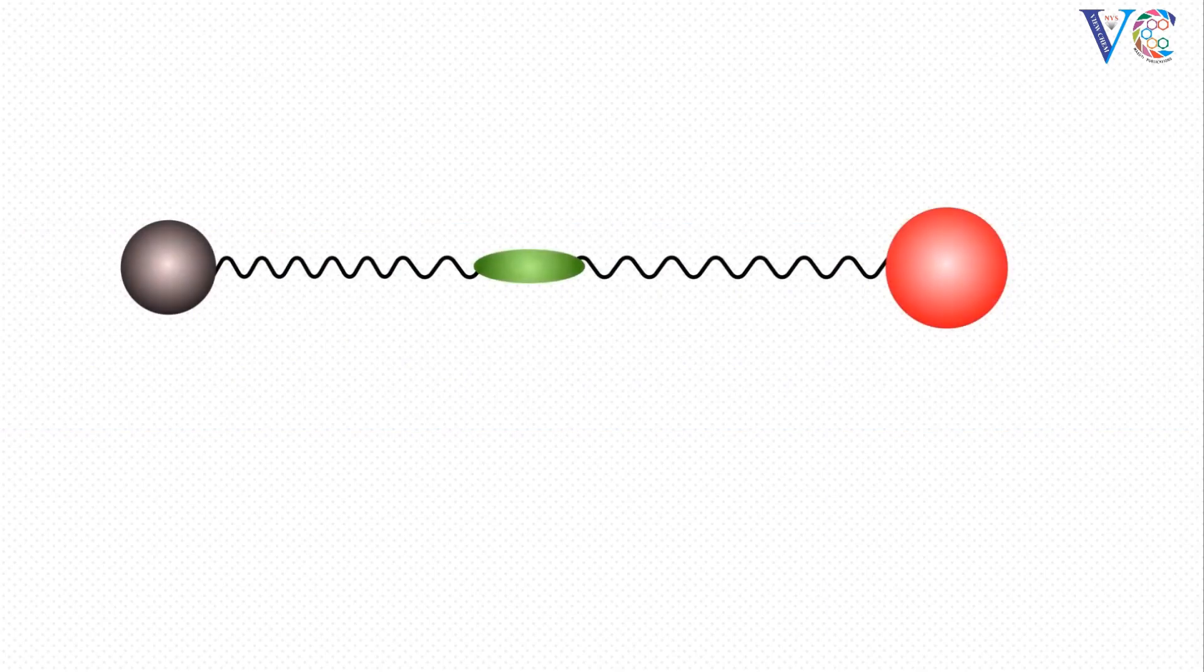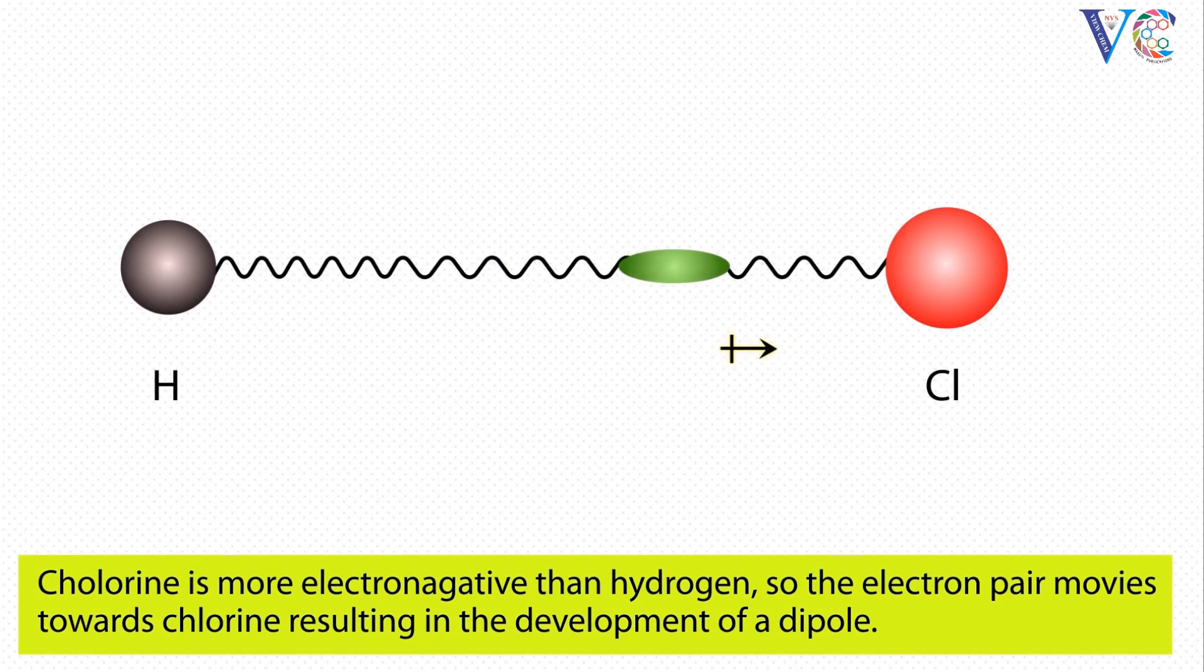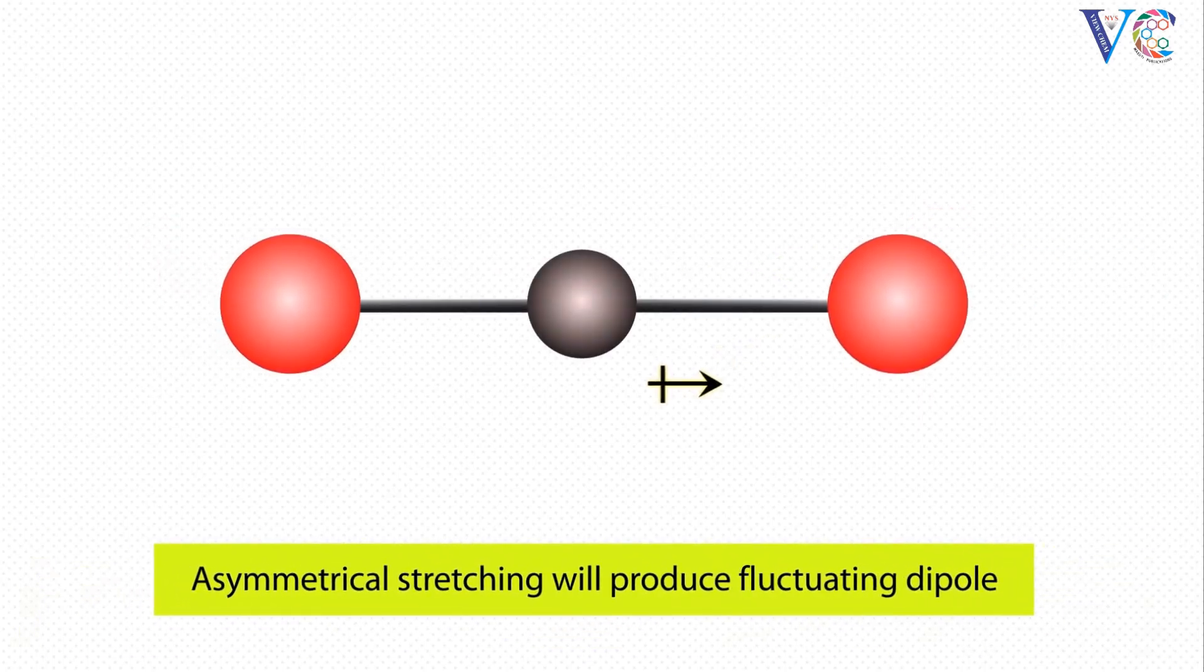A molecule may have dipole moment by virtue of the difference in the electronegativities of the constituent atoms, like HCl. Alternatively, certain vibrations in a molecule may induce a dipole moment, as in carbon dioxide.